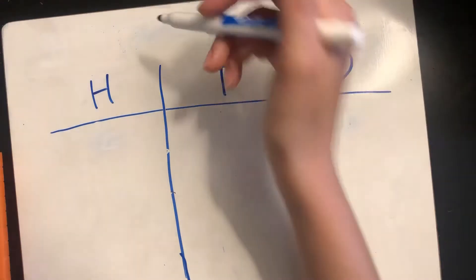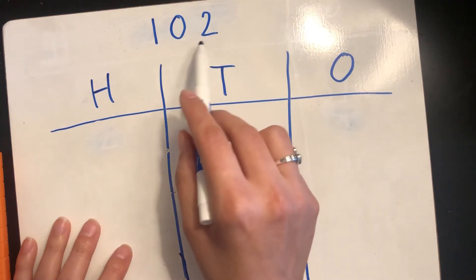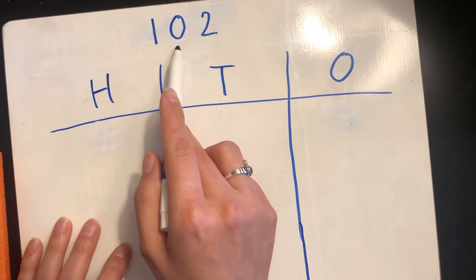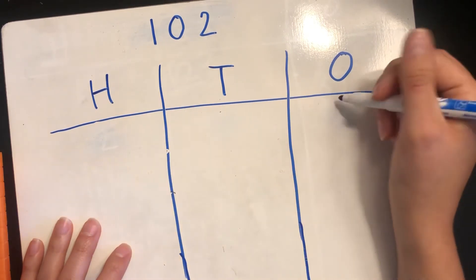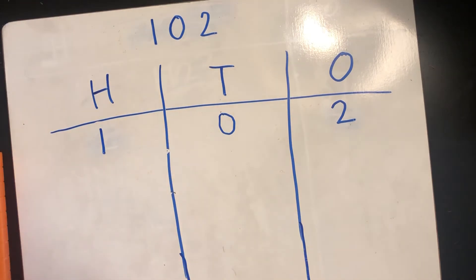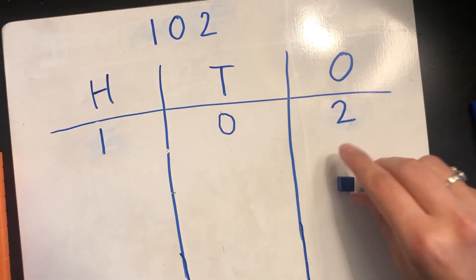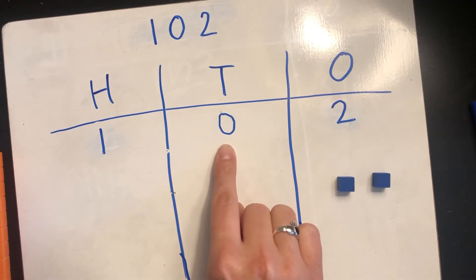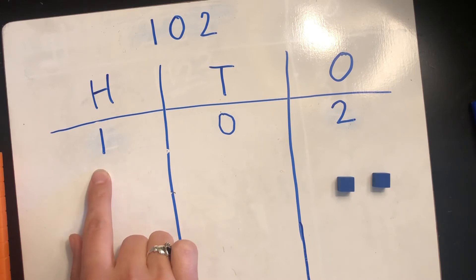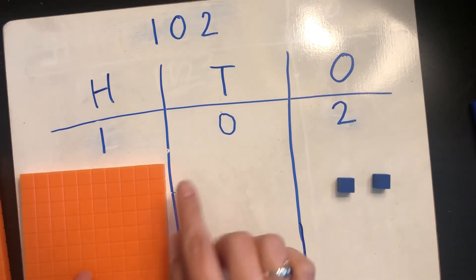Let's look at the number one hundred and two. When we're counting it goes: one hundred, one hundred one, one hundred two. The two is in the ones place. In the tens place we have a zero, and in the hundreds place we have a one. Now let's build this number using our base ten blocks. We need two ones, zero tens — so I'm not going to put any ten sticks here — and one hundred. Since there's a zero in the tens place, we don't put any ten sticks.